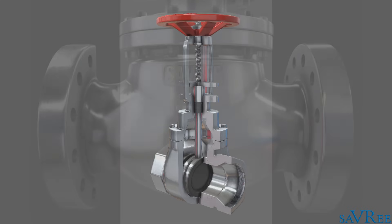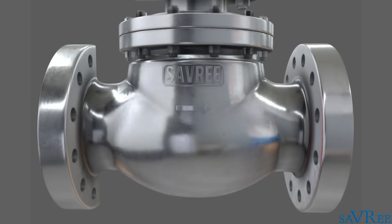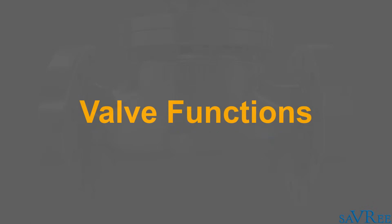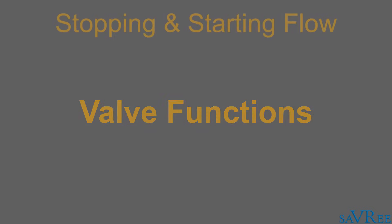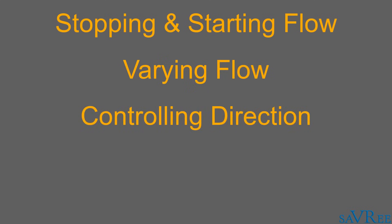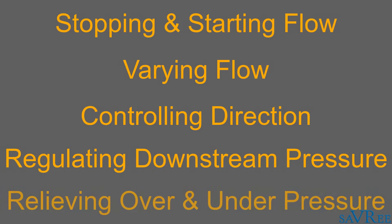There are exceptions to the rule though. Globe valves are named after the shape of the valve body itself. Valves are used for stopping and starting flow, varying the amount of flow, controlling the direction of flow, regulating downstream system or process pressure, and finally for relieving system over and under pressure.